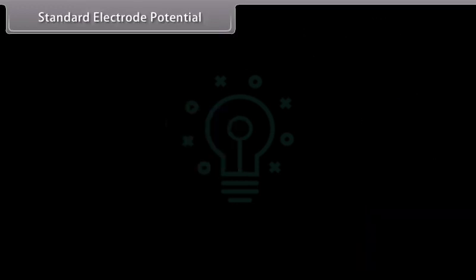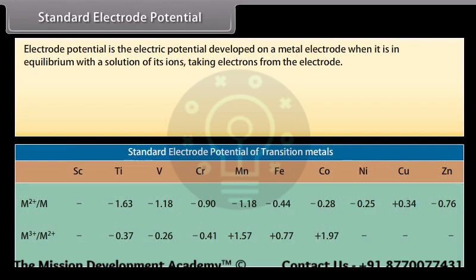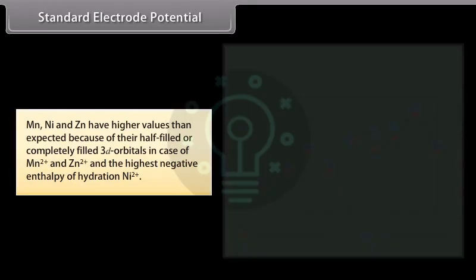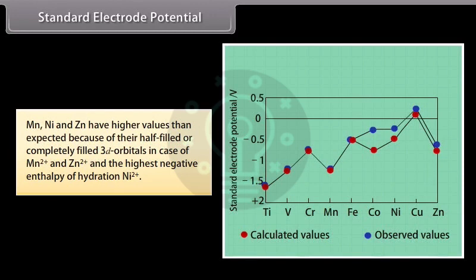Electrode potential is the electric potential developed on a metal electrode when it is in equilibrium with a solution of its ions taking electrons from the electrode. There is irregular variation in electrode potential due to irregular variation in ionization enthalpy, sublimation energy, and energy of hydration. The E⁰ value decreases from left to right across the series. Manganese, nickel, and zinc have higher values than expected because of their half-filled or completely filled 3D orbitals in the case of Mn²⁺ and Zn²⁺, and the highest negative enthalpy of hydration for Ni²⁺.